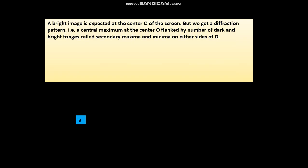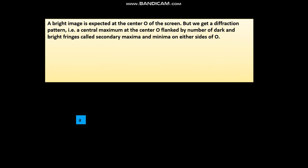Now let us see, a bright image is expected at the center of the screen, but we saw we get a diffraction pattern. That is a central maximum at the center flanked by a number of dark and bright fringes called secondary maxima and minima on either side of O.